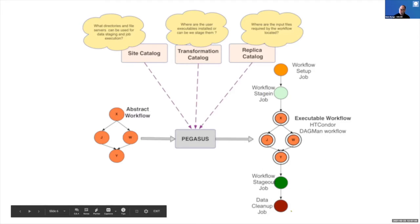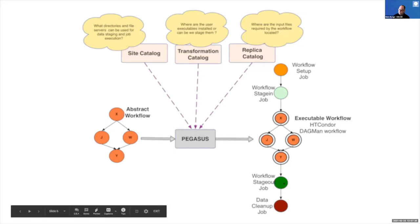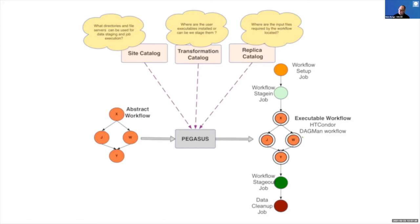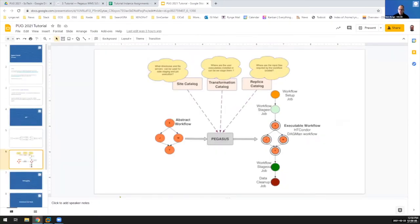Pegasus takes these three catalogs along with the abstract workflow as inputs to the planning process. With all that information, it can make an executable workflow. Usually the executable workflow looks different from the abstract one — most of the time it's larger. The planning process adds jobs for staging: directory setup, staging data in, and at the end stage-out and data cleanup. In between, there's a little Pegasus wrapper around your code to collect provenance data, handle data staging, and set up the environment. That's what the extra ring around jobs indicates.